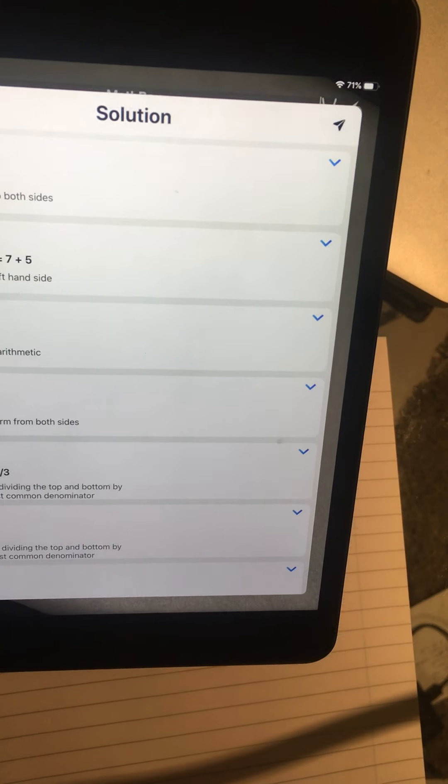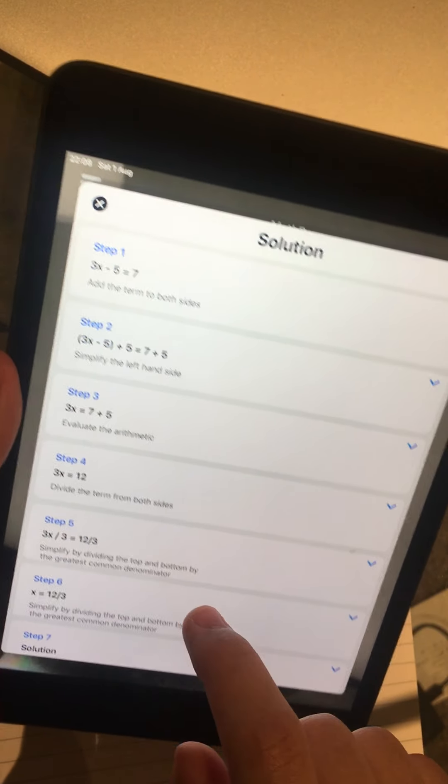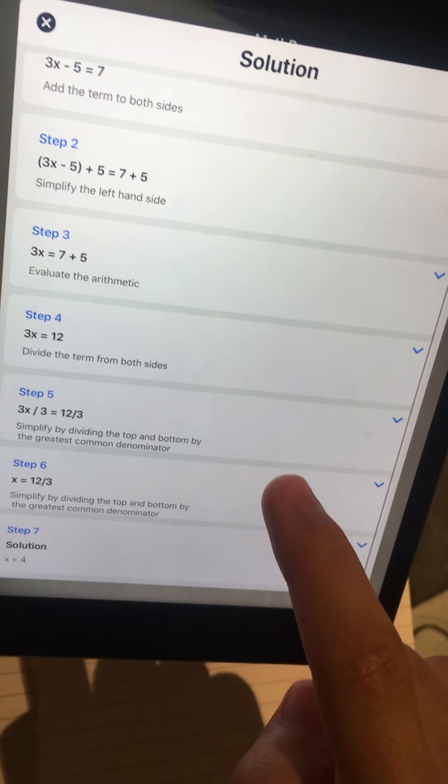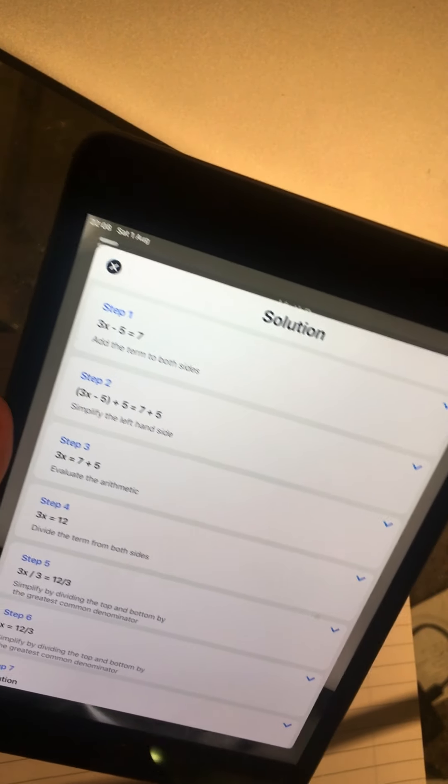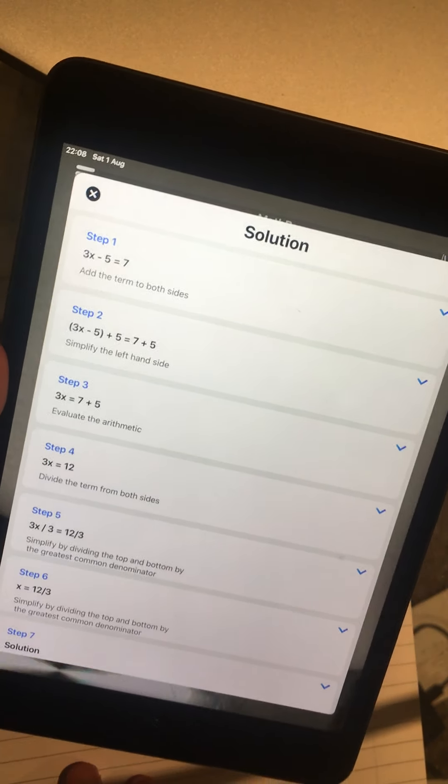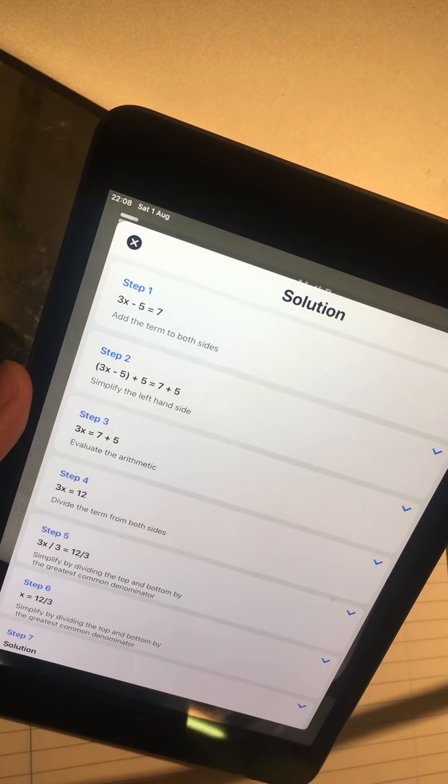So solving steps, and now I have all the steps that give me the solution. Now let's implement the steps one by one and see how the app can help us. Step number one, add the terms to both sides.